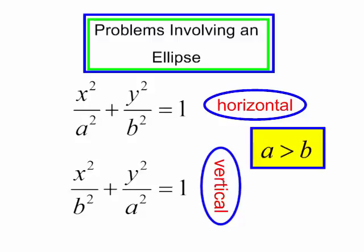Let's work a few problems involving an ellipse. Remember from a previous video, we talked about the equations of ellipses. If the largest denominator is under the x squared term, it is a horizontal ellipse. If the largest number is underneath the y squared term, it is a vertical ellipse.